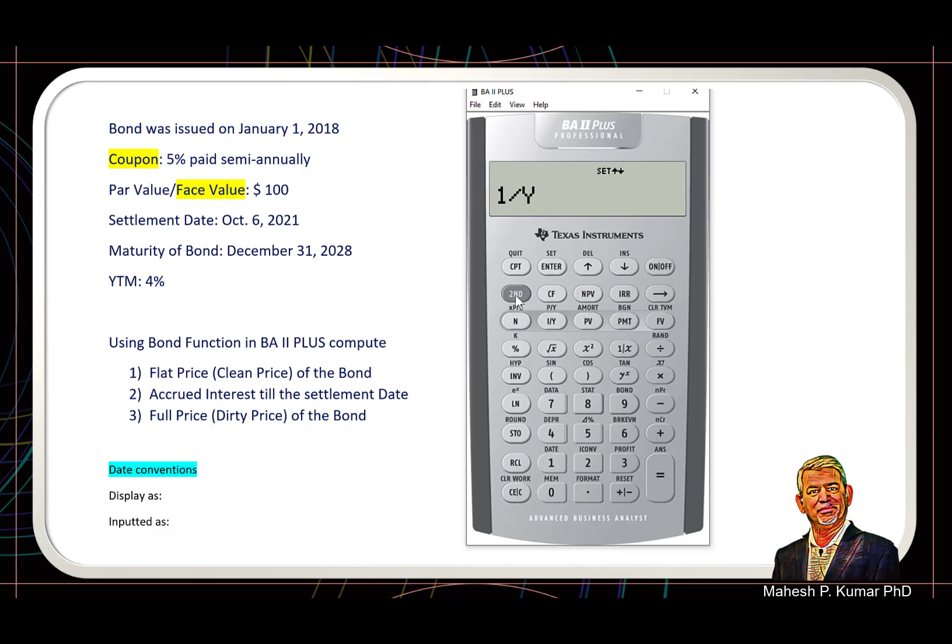And then I press down arrow. So yield is 4%. Enter, go down. Principle—so this principle is actually the flat price or the clean price of the bond, and this is what we want to calculate. So we will hit CPT button, and this comes out to be 106.22. So this is the flat price or the clean price of the bond which we calculated using inbuilt bond function.